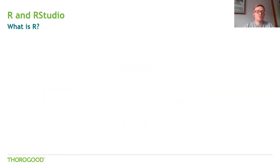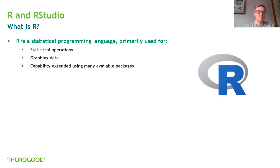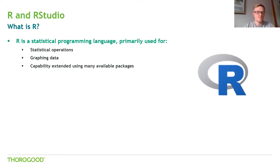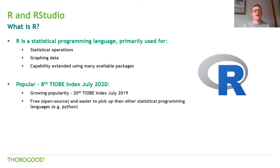So, R and RStudio first. What is R? I'm not talking about the reproduction number we're all trying to keep below one — I'm actually going to talk about the statistical programming language that's primarily used for statistical operations and graphing data. It's open source as well. You can really extend its capability by adding packages — there's a whole host available to add more capability to the language. It's a very popular language at the minute and it's in the TIOBE index.